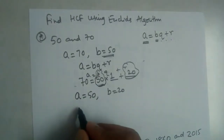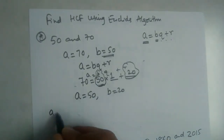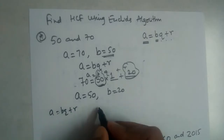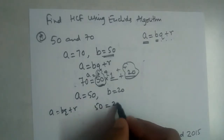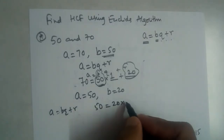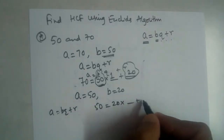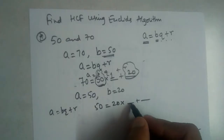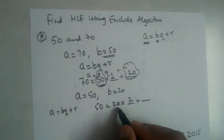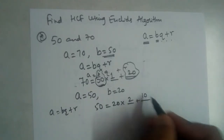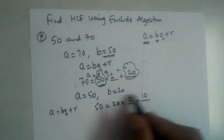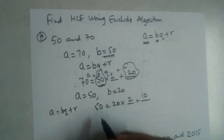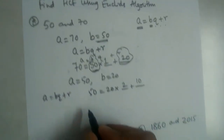Again, write it in the form a = bq + r. So 50 is equal to 20 into 2 plus 10. Twenty twos are 40, and 40 plus 10 is 50, so the right-hand side equals 50.